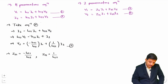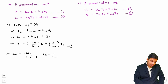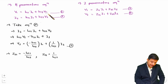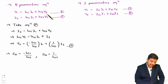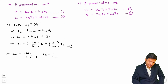Now we want v1 in terms of i1 and i2. From equation 1, we have v1 in terms of i1 and v2. Now that we have the expression for v2 from equation 5, if we substitute equation 5 into equation 1, we can express v1 in terms of i1 and i2. So let us substitute equation 5 into equation 1.